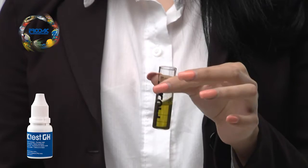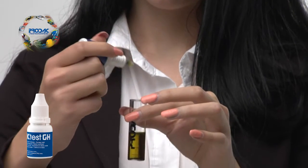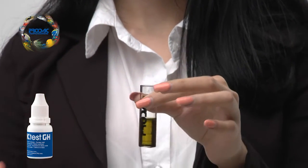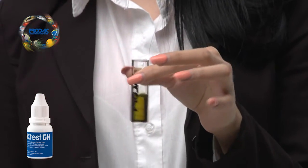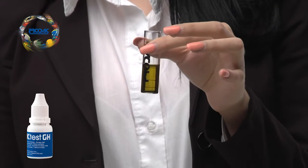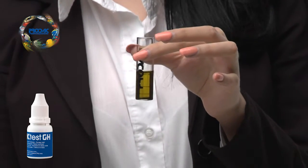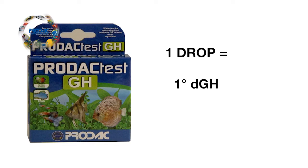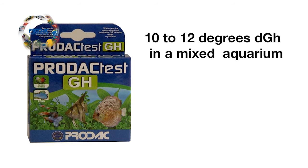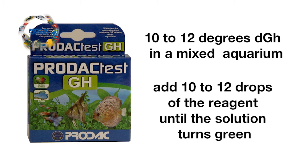Total water hardness is given in German degrees and corresponds to the number of drops of reagent utilized to obtain the green color. One drop equals one German degree. It is suggested to have 10 to 12 degrees in a mixed aquarium — namely, you should add 10 to 12 drops of the reagent until the solution turns green.